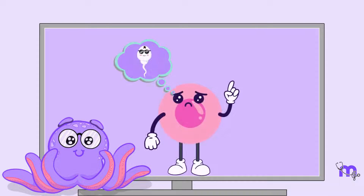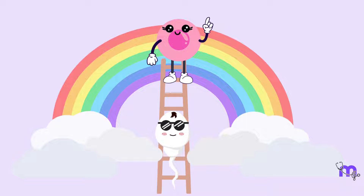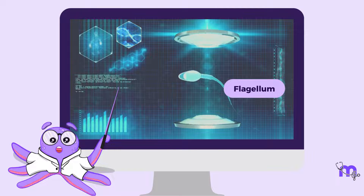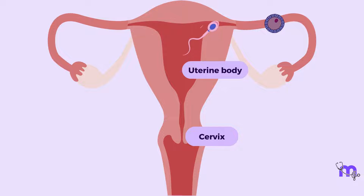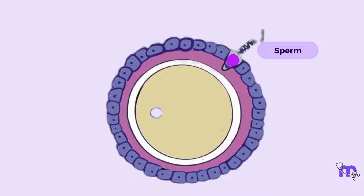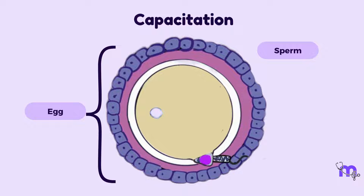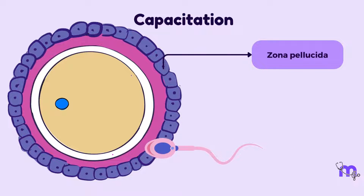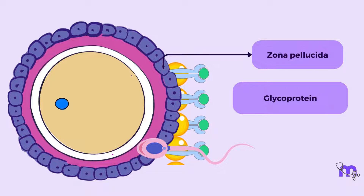Now let us assume this waiting egg is destined for fertilization. The sperm, propelled by their whip-like tails called flagella, travel through the cervix and into the uterus, eventually reaching the fallopian tube. Upon reaching the vicinity of the egg, the sperm undergo a process called capacitation, where they acquire the ability to penetrate the protective layers surrounding the egg. The outermost layer of the egg, known as the zona pellucida, is composed of glycoproteins that bind to specific receptors on the sperm's surface.